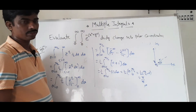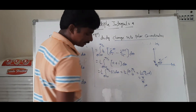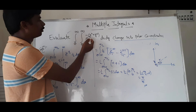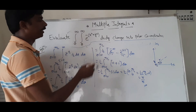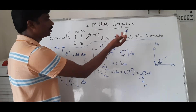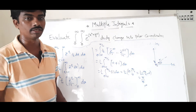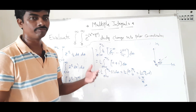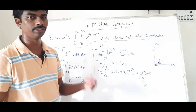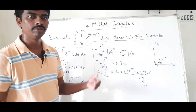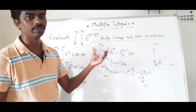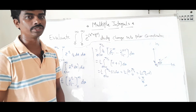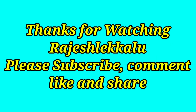So the answer is π/4. We evaluated the integral 0 to infinity, 0 to infinity of e^(−(x²+y²)) dx dy by changing into polar coordinates. If you have any doubts, please comment. Please subscribe to my channel and share with your friends. We have all mathematics topics related to M1, M2, and B.Tech in the playlist.